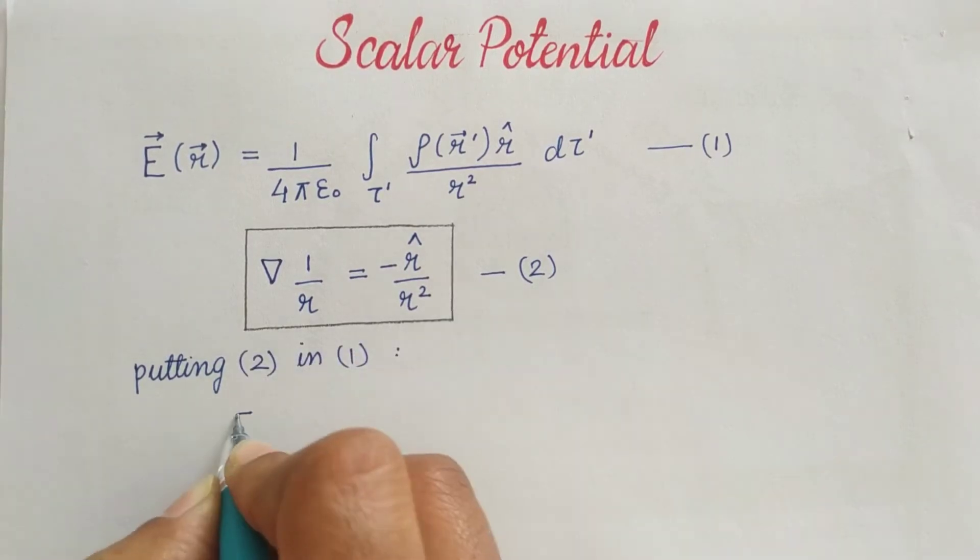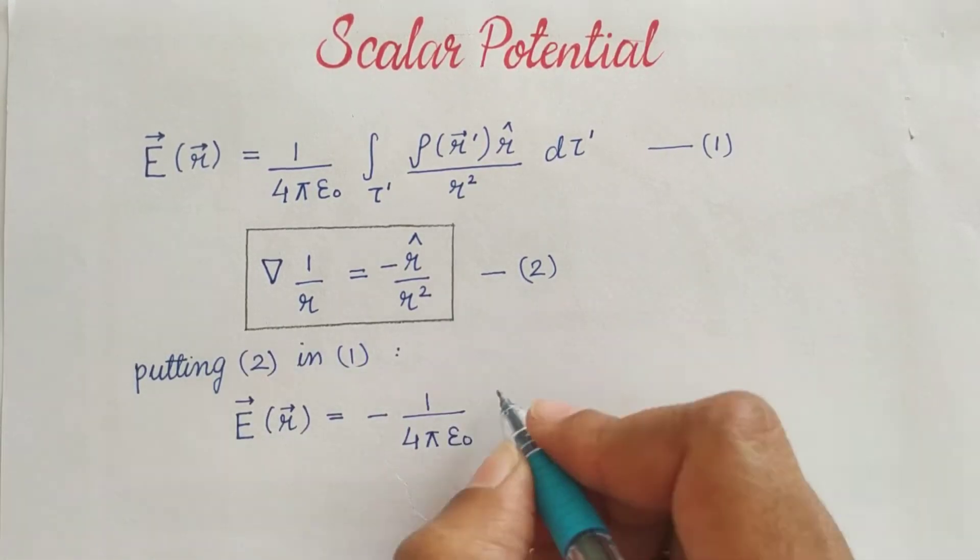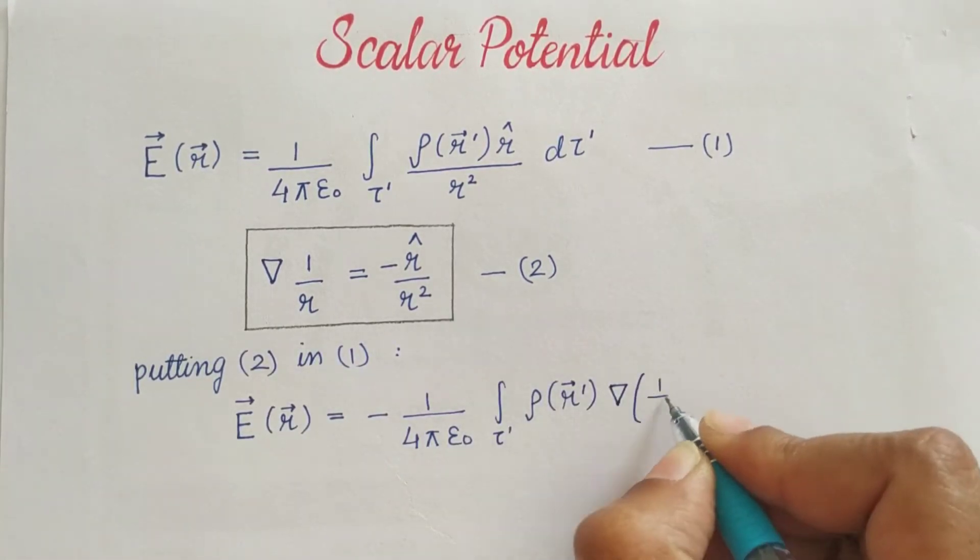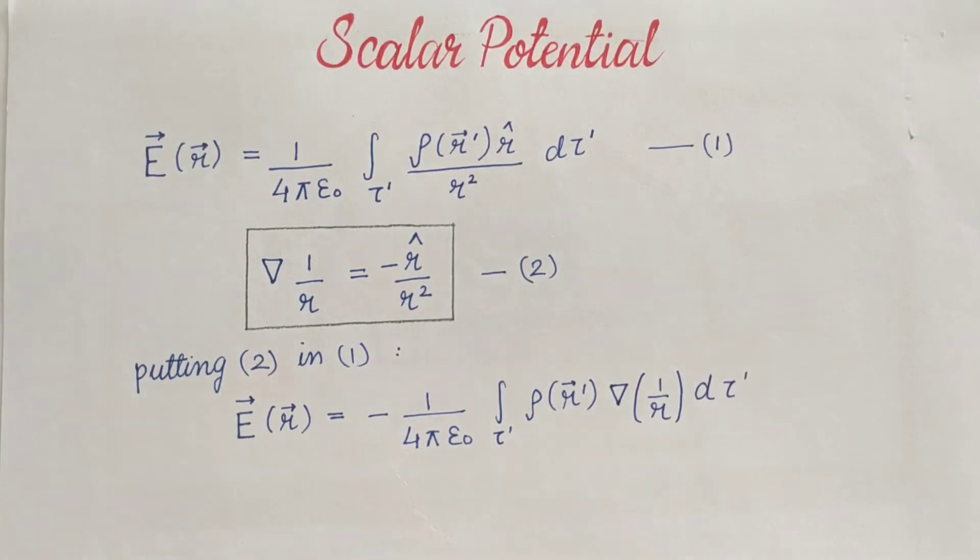Replacing it and rewriting, we had replaced R cap upon R square by del 1 upon R and this minus sign over here in front.